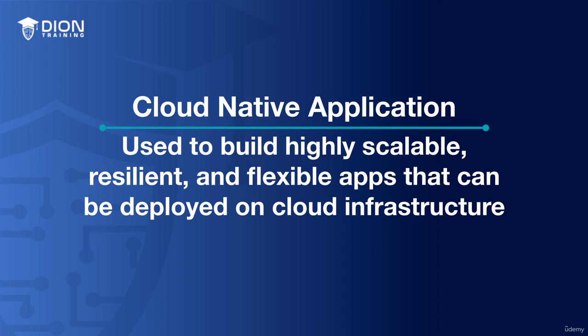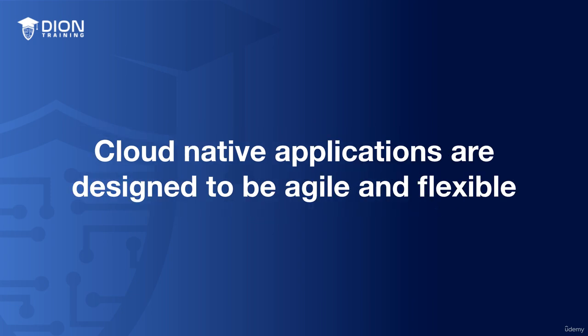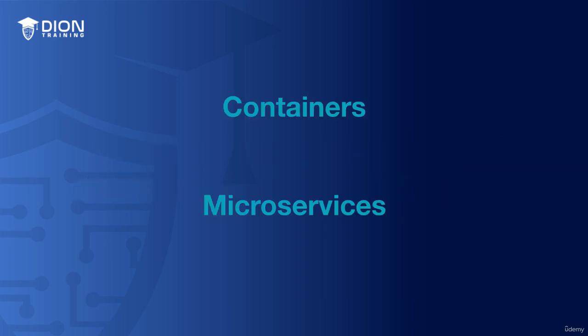Cloud-native applications are designed to run on cloud infrastructure. They're used to build highly scalable, resilient, and flexible applications that can be deployed on cloud infrastructure to take advantage of the elasticity and scalability of the cloud, making it easier to scale your applications up and down as needed. This makes it possible to run applications that are highly available, even when faced with high traffic volumes or hardware failures. Additionally, cloud-native applications are designed to be agile and flexible, making it easier to deploy updates and changes more quickly and efficiently. Cloud-native applications are usually built using containers and microservices.